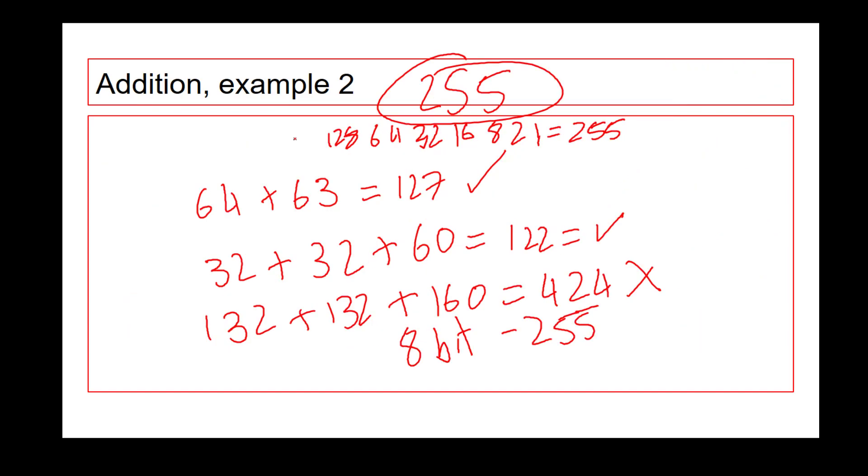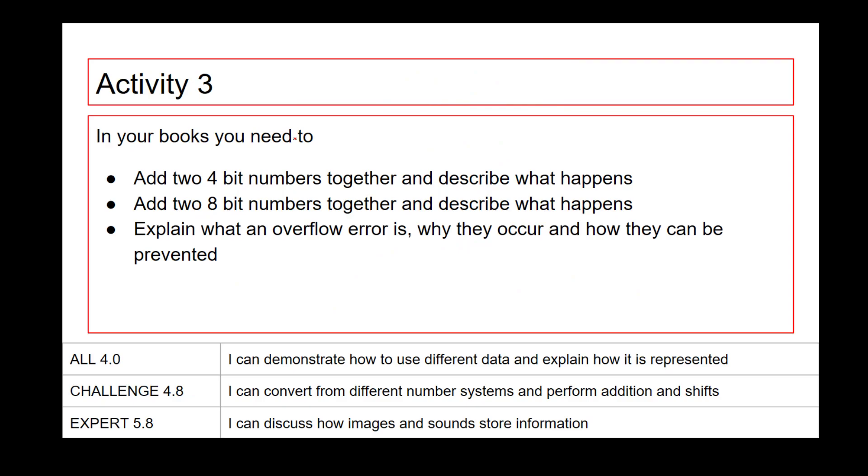So in your books, what I want you to do is add two 4-bit numbers together, describe what happens, add two 8-bit numbers together, describe what happens, explain what overflow errors are, why they occur, how they can be prevented. But that last one, I want you to do a little bit of research. So give the video a quick pause, and then we're going to get cracking again.